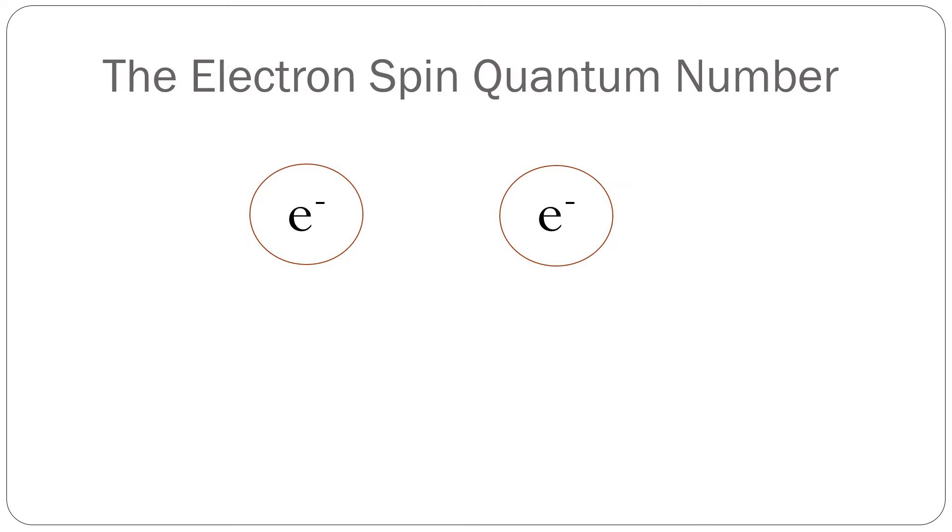There is a fourth quantum number, the electron spin quantum number. The electron spin has an interesting history and an interesting math behind it, both of which are beyond the scope of this channel and won't be discussed here.